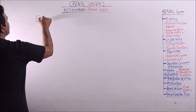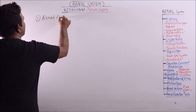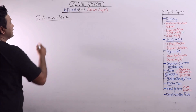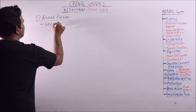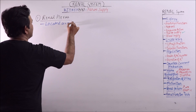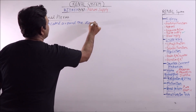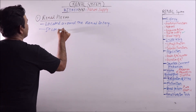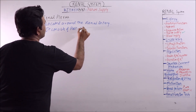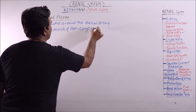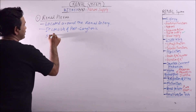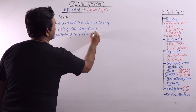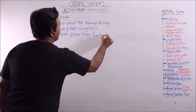The nerve supply mainly consists of the renal plexus. The nervous system communicates with the kidney via the renal plexus, which is located around the renal artery. It consists of postganglionic sympathetic fibers from T10 to L1.